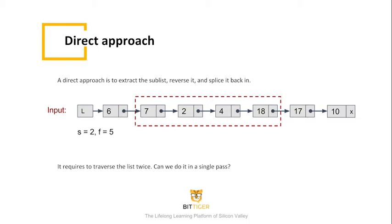By analyzing the time complexity, since we have to iterate through the list twice, the time complexity is about O of 2 times N, where N is the length of the original list. Can we do better?